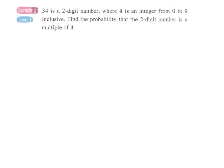Example 2: 3x is a two-digit number, where x is an integer from 0 to 9 inclusive. Inclusive means including 0 and 9. Find the probability that the two-digit number is a multiple of 4. We can make use of counting to solve this problem.